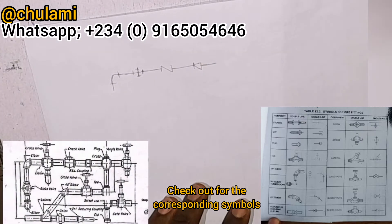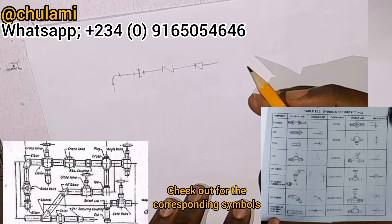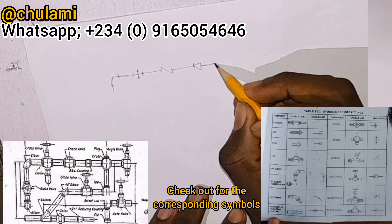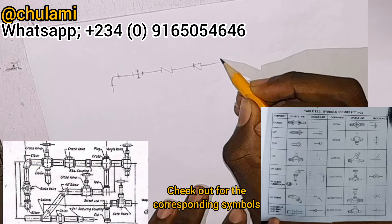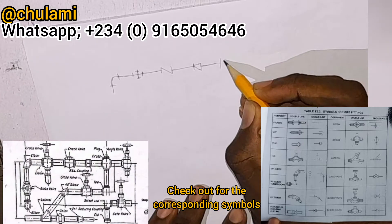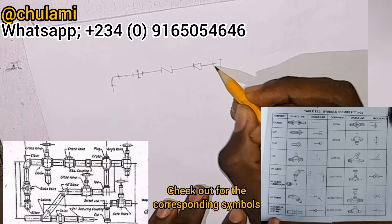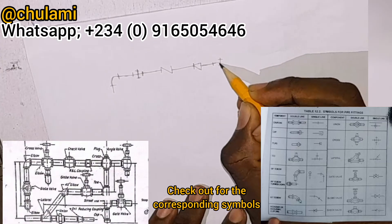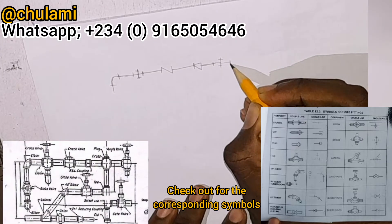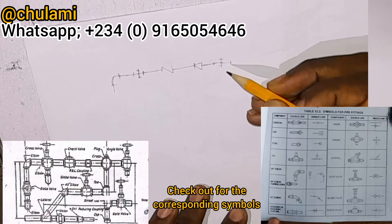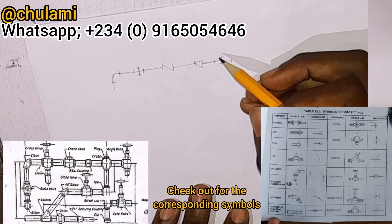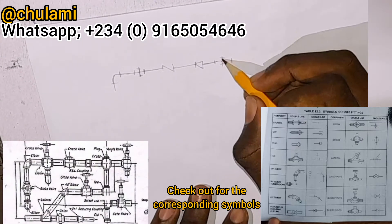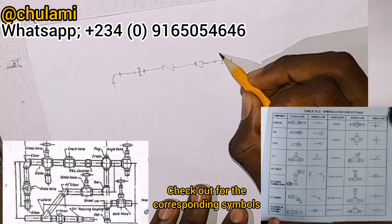After the coupling you have a cross first, which is drawn like this, and then on top of the cross you have a plug — the symbol for plug is drawn like this.